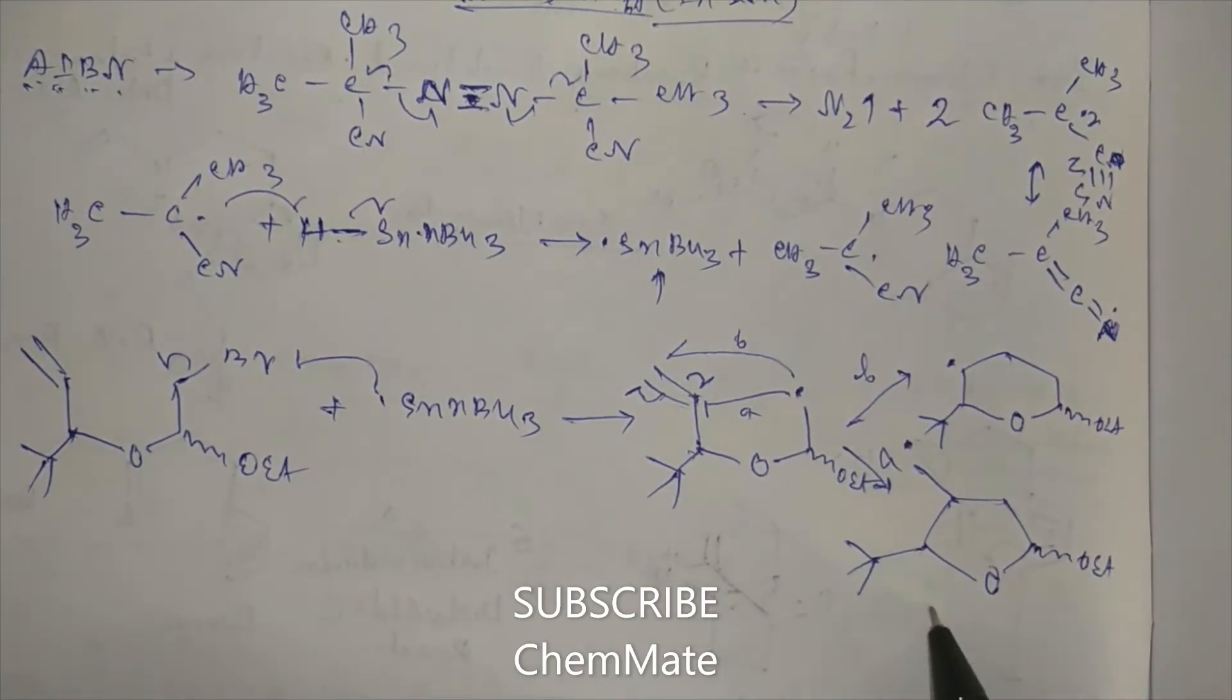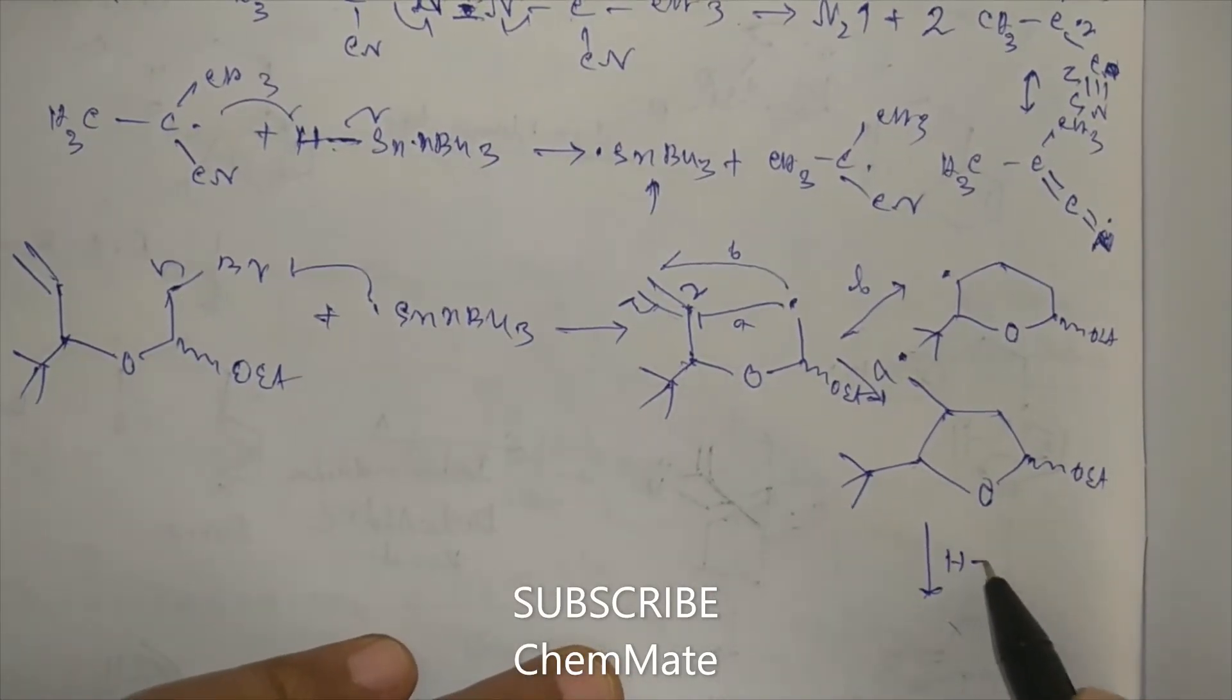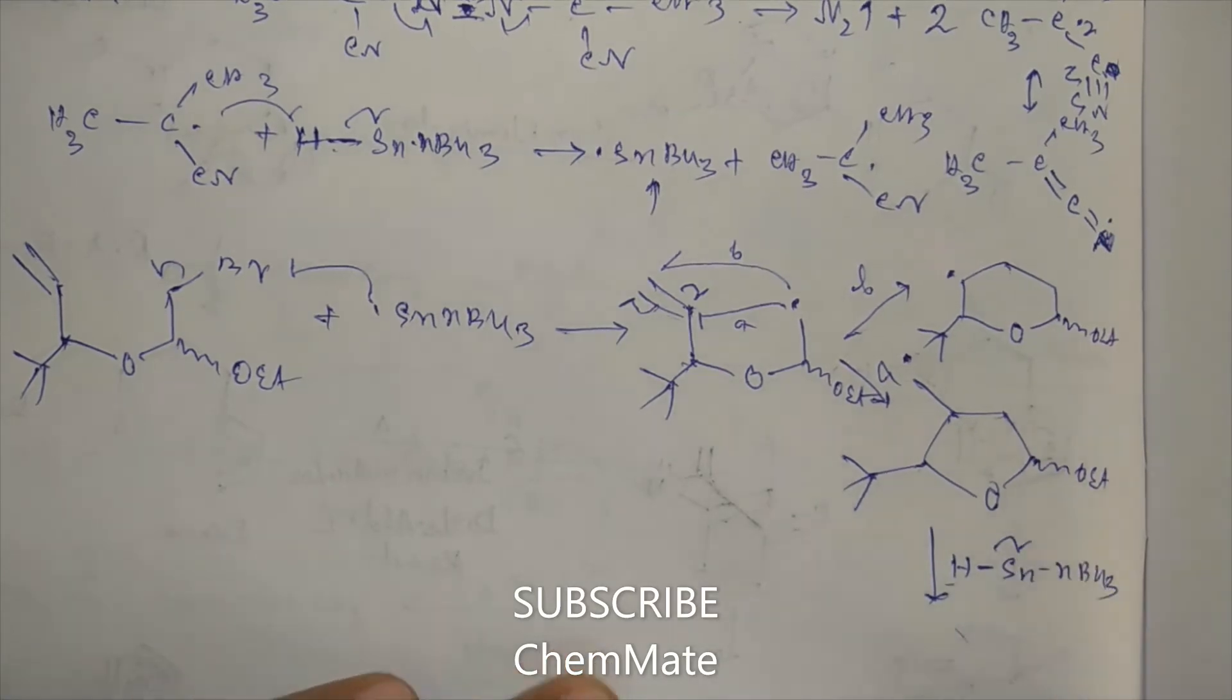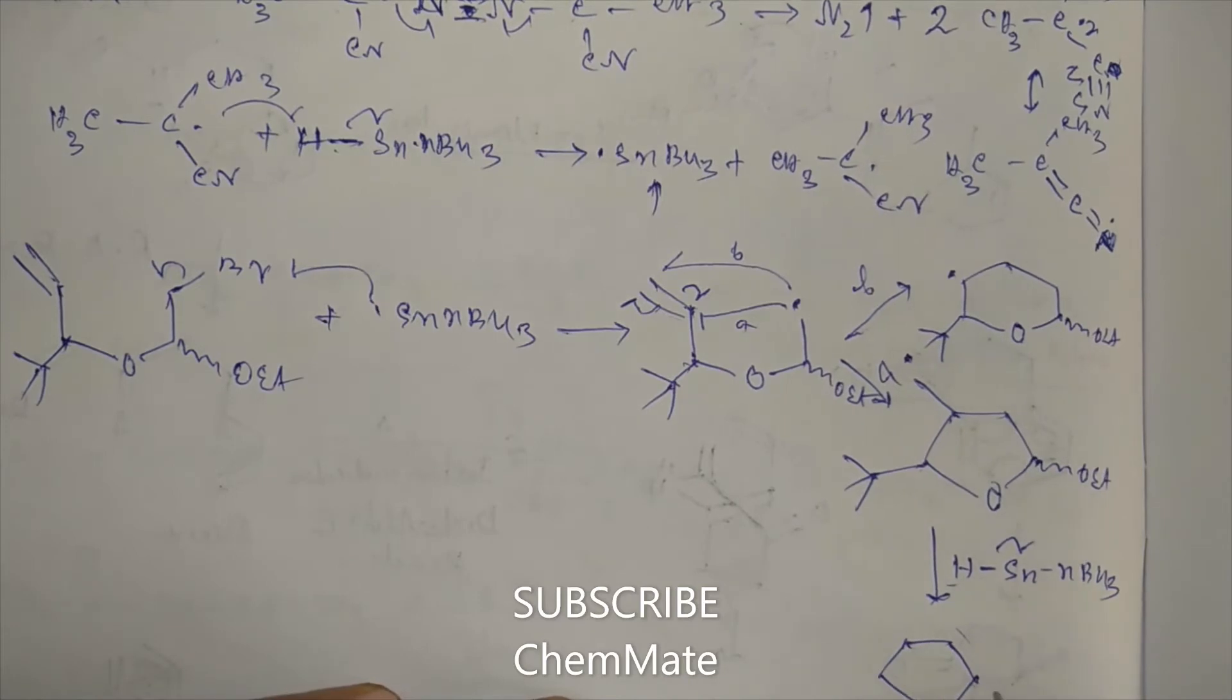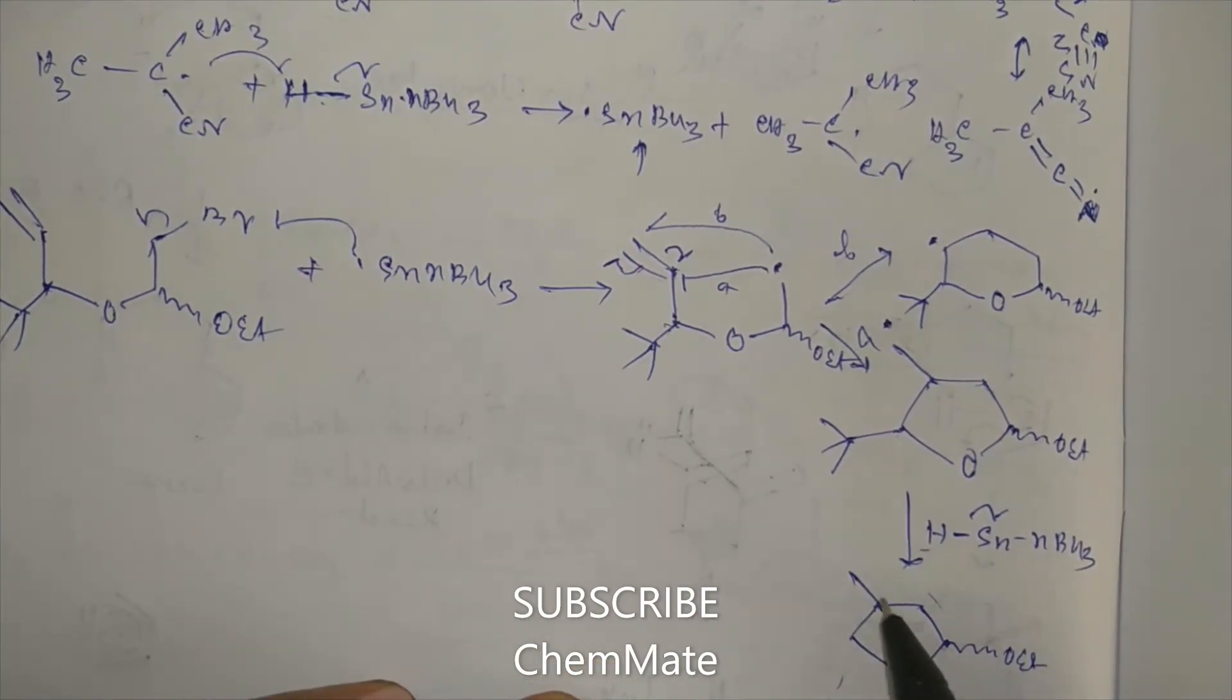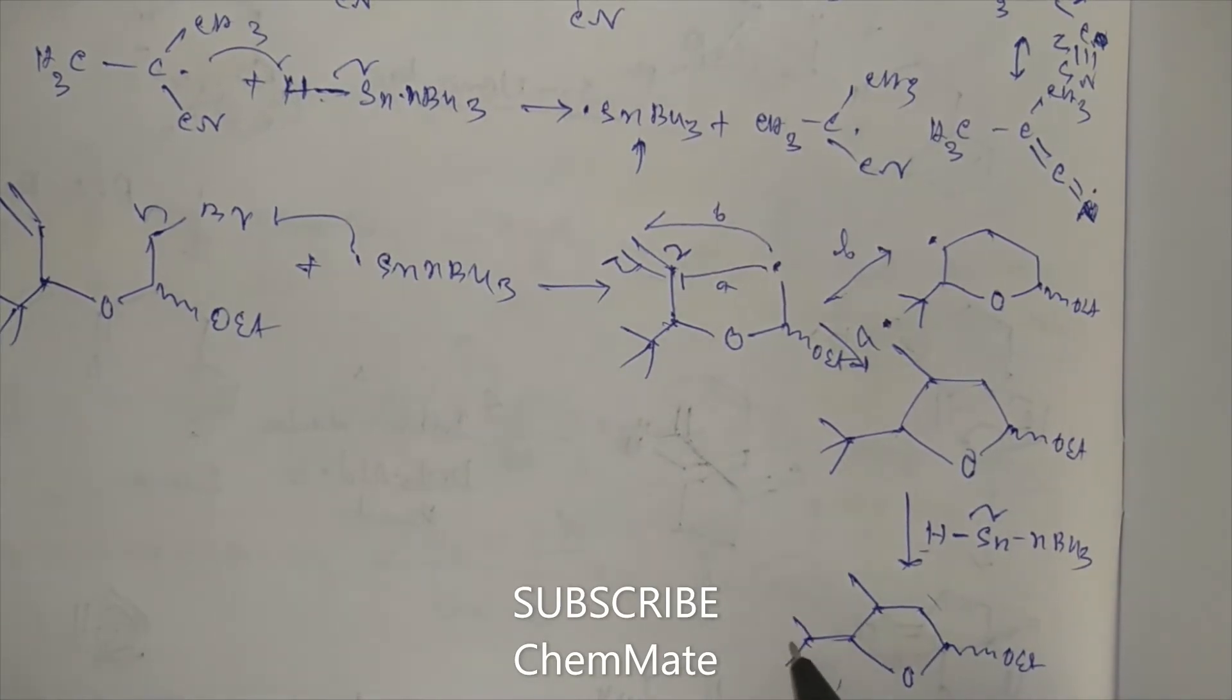Now from this A, it will take one hydrogen from this HSNBu3. So the product will be OEt.